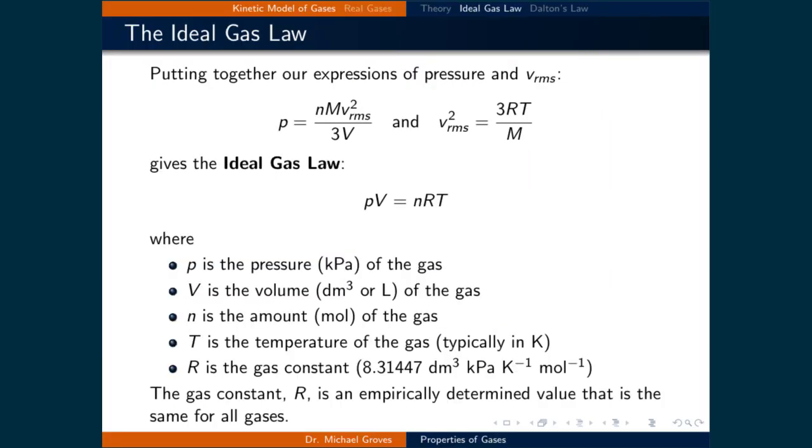As was just shown, the kinetic model of gases can be used to derive the pressure exerted by a sample of gas. If this is combined by the square of the root mean squared velocity of the gas calculated from the Maxwell distribution of speeds, then we can get the ideal gas law, which is equal to PV is equal to NRT.